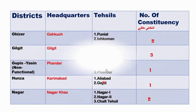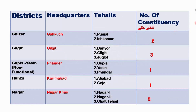Number of constituencies in each district of Gilgit Division: in Ghizer, there are two constituencies; in Gilgit, there are three; in Gupis-Yasin, there is only one; in Hunza, there is only one; and in Nagar, there are two constituencies.